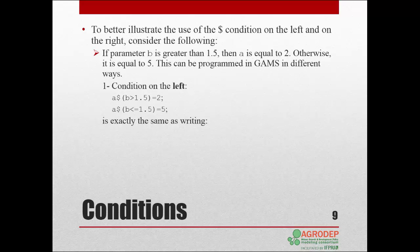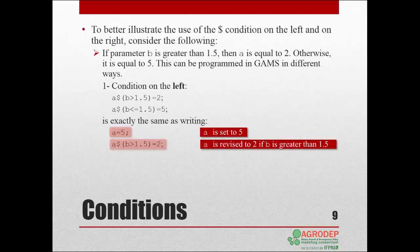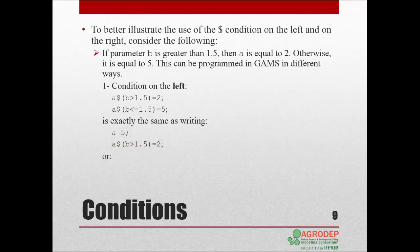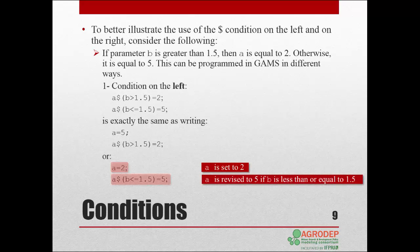We can also write: first, a simple assignment setting a to 5, and a second assignment that changes a to 2 if b is greater than 1.5. Finally, we can write a simple assignment that sets a to 2, followed by an assignment that changes the value of a to 5 if b is less than or equal to 1.5. All three writings are equivalent in GAMS.